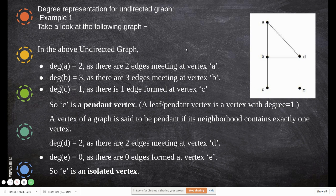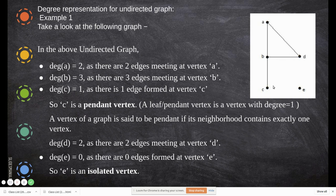Now let us see the degree representation for an undirected graph. The degree of a vertex is the number of edges connected to it. Degree of A is 2, because edges A–B and A–D are connected to it. Degree of B is 3, since three edges meet at B. Degree of C is 1, as only one edge from B to C exists.